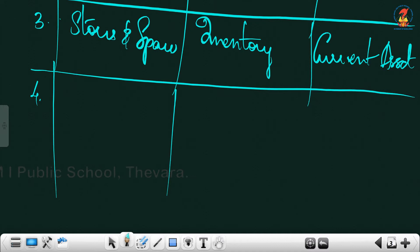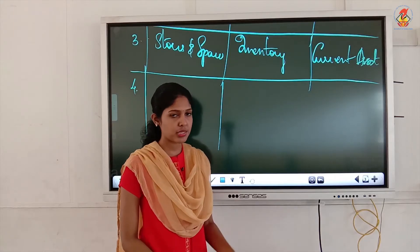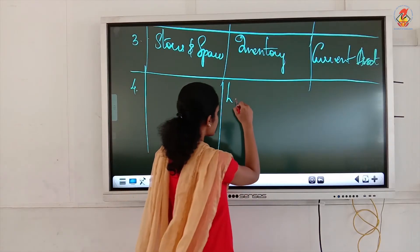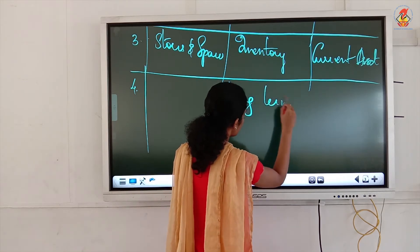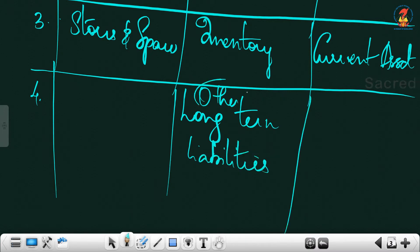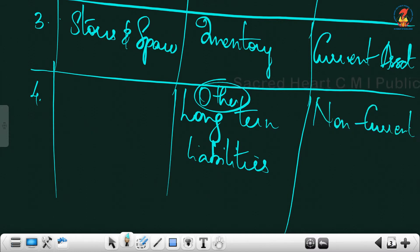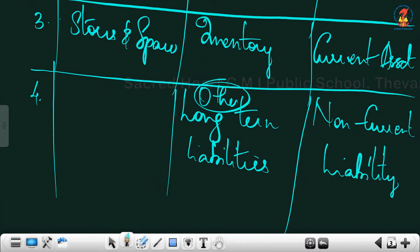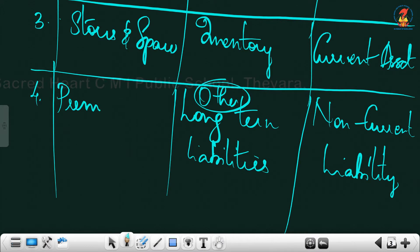Fourth one: premium on redemption of debentures. The subhead is other long-term liabilities and the major head is non-current liabilities. The same subhead and major head apply to premium on redemption of preference shares as well.